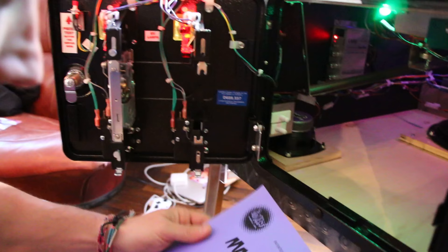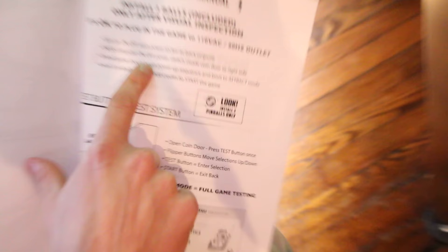What does the actual instruction say? Does it show a picture of it, Chris? It says press computer on/off power switch inside coin door to the right side. Pinball game should begin powering. Obviously that's in boot track mode.